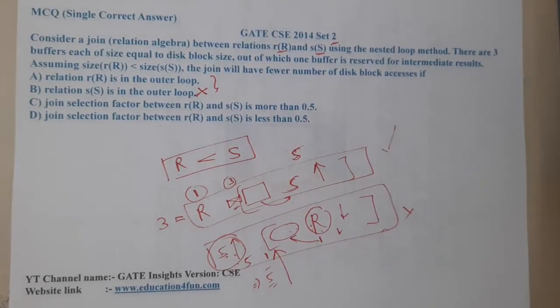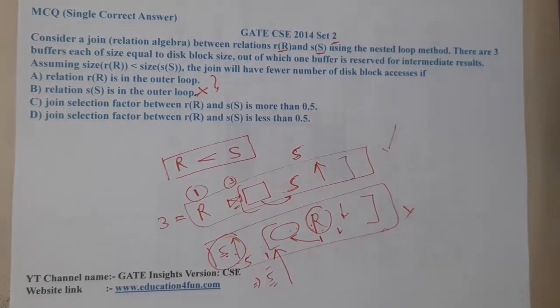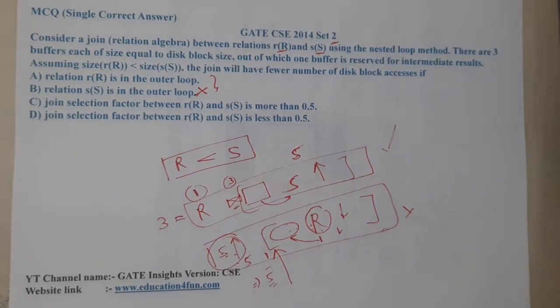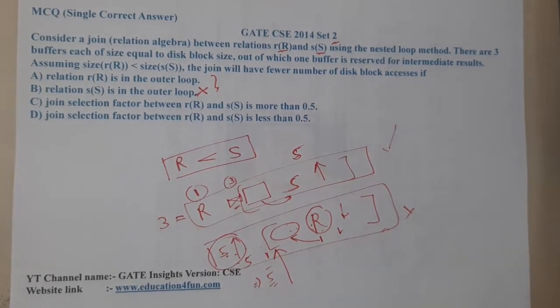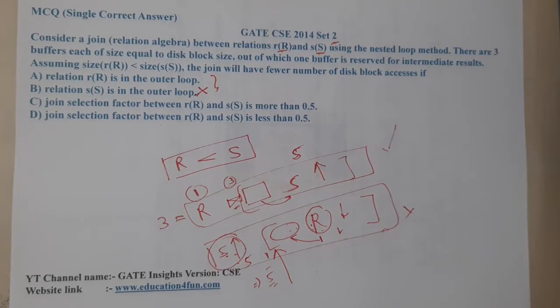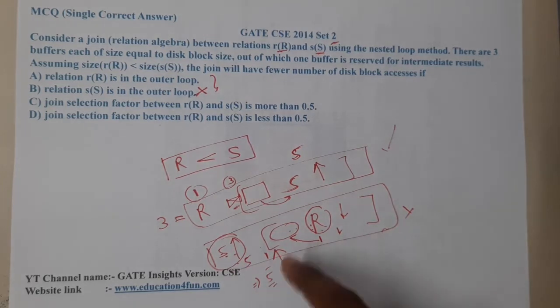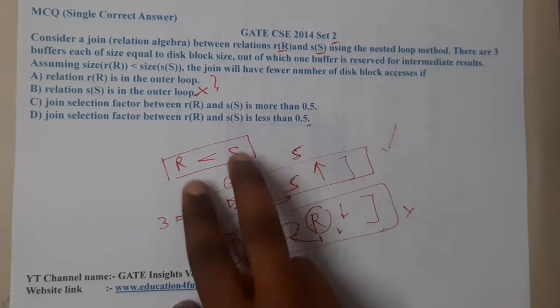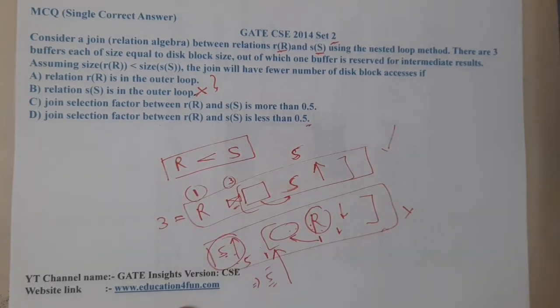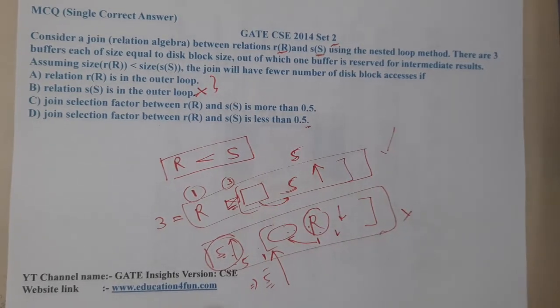Moving on to option C and D. Option C says the join selection factor between R and S should be more than 0.5, and should be less than 0.5. When we are working with this join selection, I think we cannot say it accurately because it directly depends on the values and the order in which they are placed.